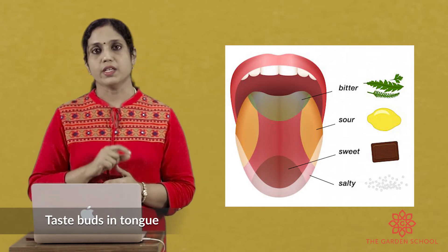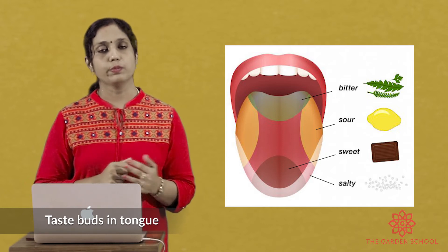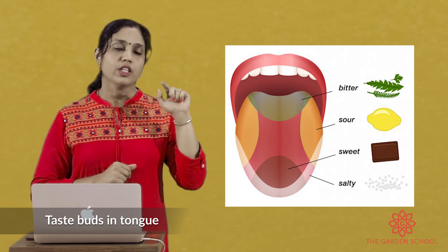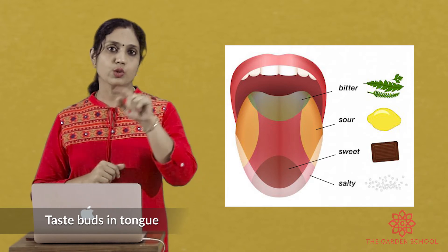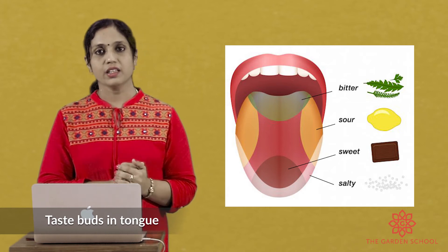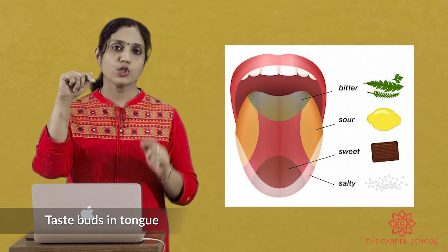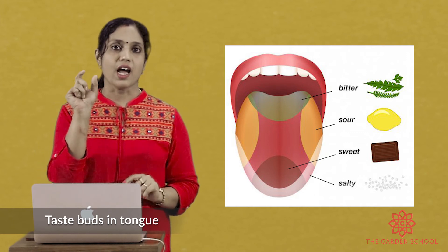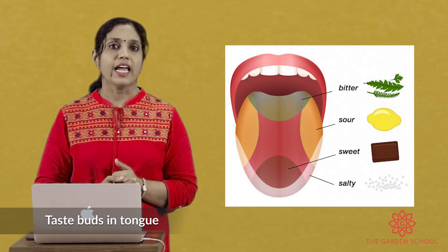In the tongue, there are different taste buds that help us experience sweet, salty, sour, and bitter. The tip of the tongue — the front — is for sweet. The two sides next to the tip are for salty. The corner areas are also salty, and the last end at the back is for bitter.